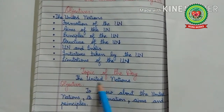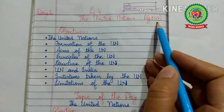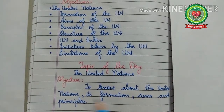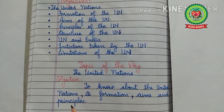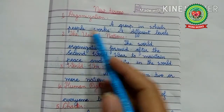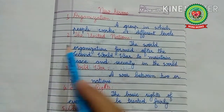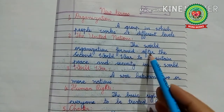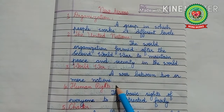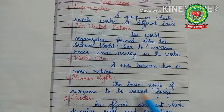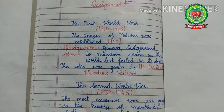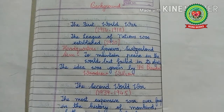Today's topic is the United Nations — page number 159. The objective is to know about the UN, its formation, aims, and principles. New terms: 'organization' means a group in which people work at different levels; 'United Nations' is the world organization formed after the Second World War to maintain peace and security; 'world war' is a war between two or more nations; 'human rights' are the basic rights of everyone to be treated fairly; and 'charter' is an official document describing rules and regulations.